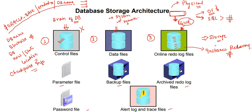If you trigger a SHUTDOWN ABORT, it shuts the database down forcefully without completing a checkpoint or writing appropriate information to disk — the instance crashes. The next time you start the database, instance recovery is required. We don't perform this manually; the background process SMON (System Monitor) automatically performs the instance recovery and brings the database back up. We will go into more detail about online redo log files, including redo log groups and members, in separate sessions.